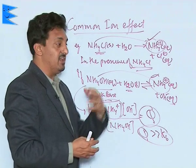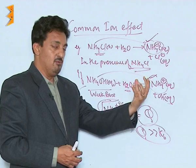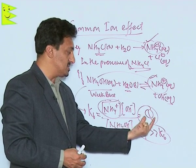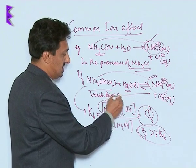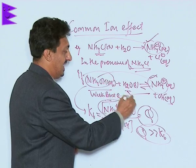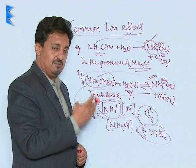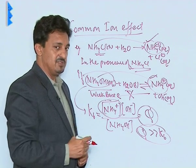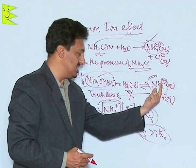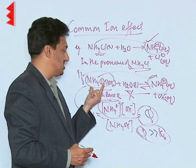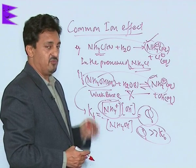Since Q is very large, the system will move back in the reverse direction to bring Q back equal to Kb. The dissociation of the weak base gets suppressed — it moves backward. This is consistent with Le Chatelier's principle: the large concentration of ammonium ions pushes the equilibrium back, suppressing the dissociation of ammonium hydroxide.